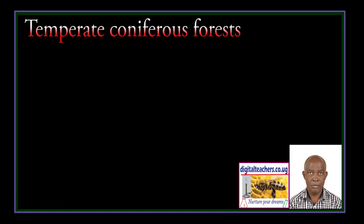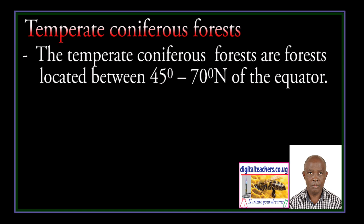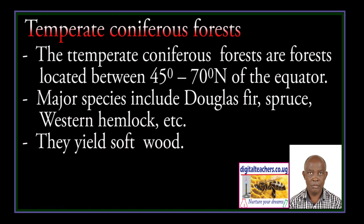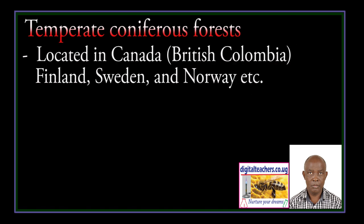Temperate coniferous forests are forests located between 45 to 70 degrees north of the equator. Major species include Douglas fir, pine, spruce, western hemlock, and so on. They yield softwoods. They are located in Canada, British Columbia, Finland, Sweden, Norway, and so on.